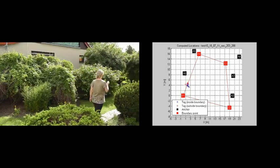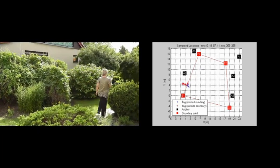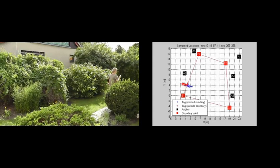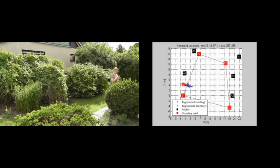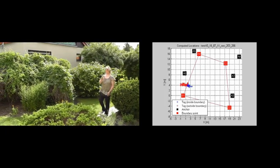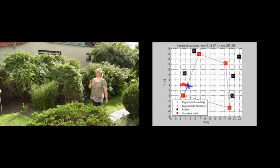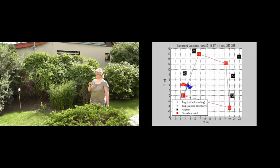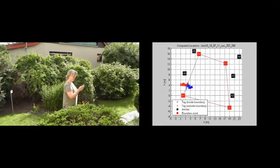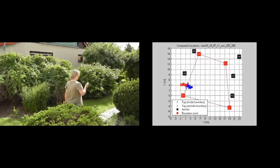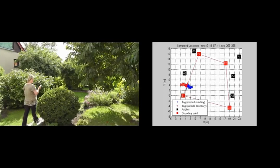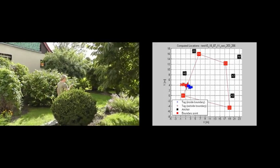Next, we go to the back side of the house to test the boundary segment B1 to B4. As can be seen from the data, the right boundary segment is crossed consistently. The resulting crossing point is about 2 meters away from the true boundary.